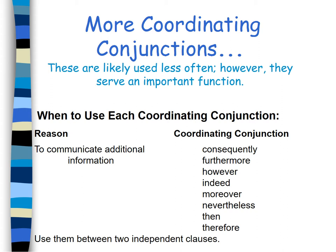More coordinating conjunctions are likely used less often. However, they serve an important function. When to use each coordinating conjunction: for a reason, or to communicate additional information, you can use consequently, furthermore, however, indeed, moreover, nevertheless, then, and therefore. Use them between two independent clauses.